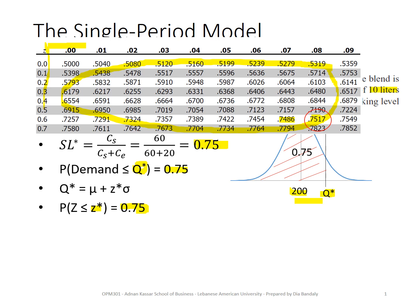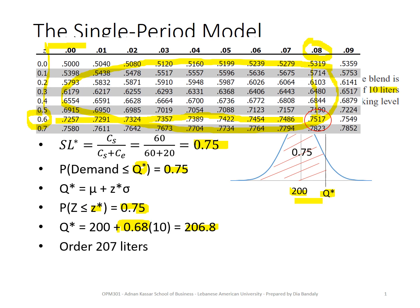The area closest to 0.75 sits in a row ending in 0.6 — that's the first decimal of the Z value — and the corresponding column gives 0.08, meaning our Z* = 0.68. Plugging 0.68 into the equation for Q* gives Q* = 200 + 0.68 × 10 = 206.8. Since we can't order a fraction, we round up to 207 liters.